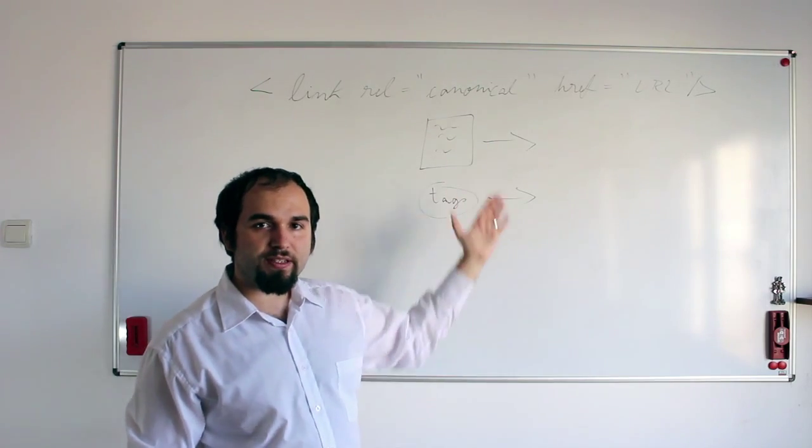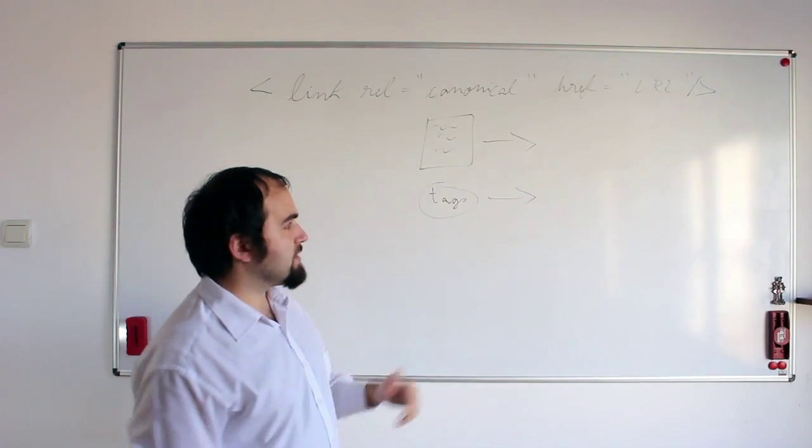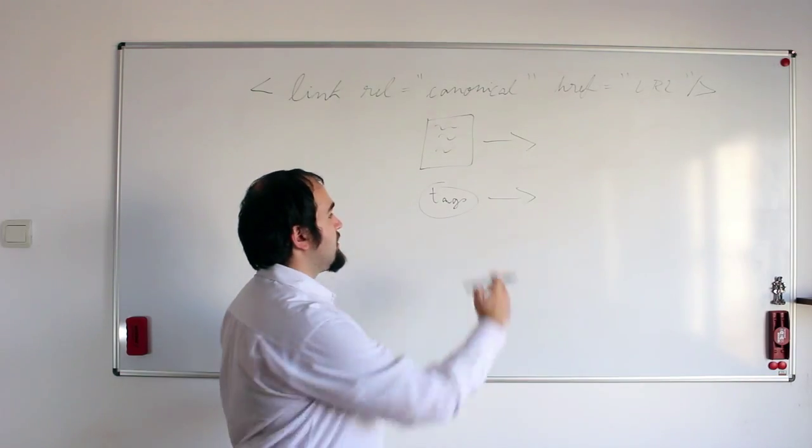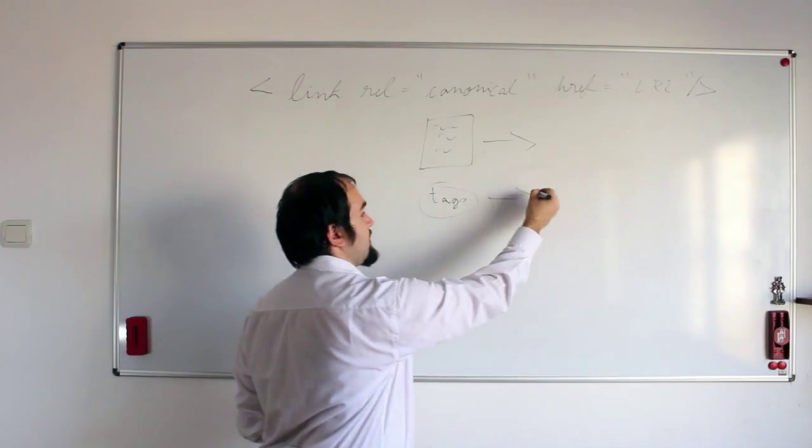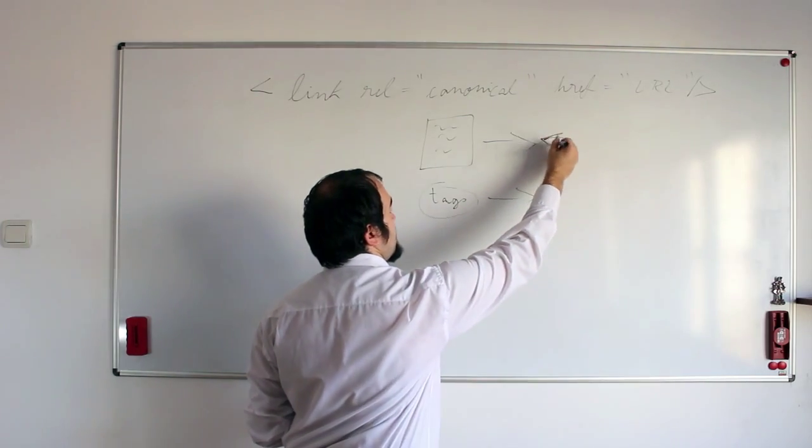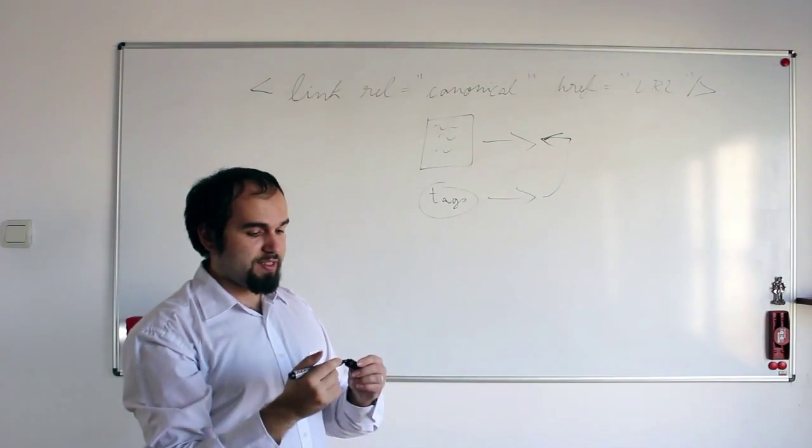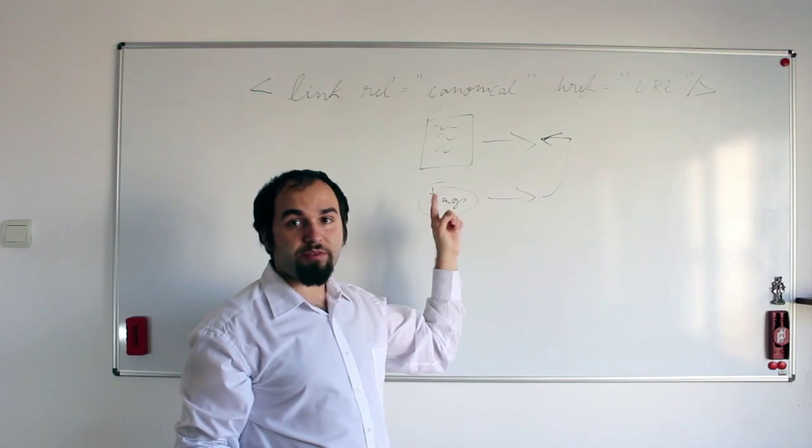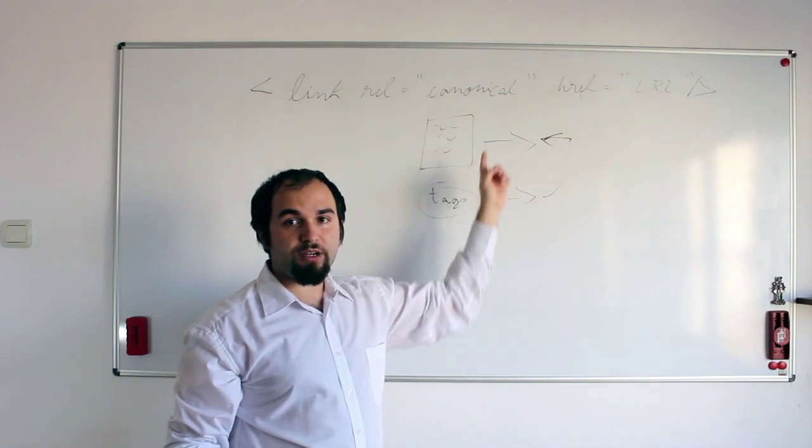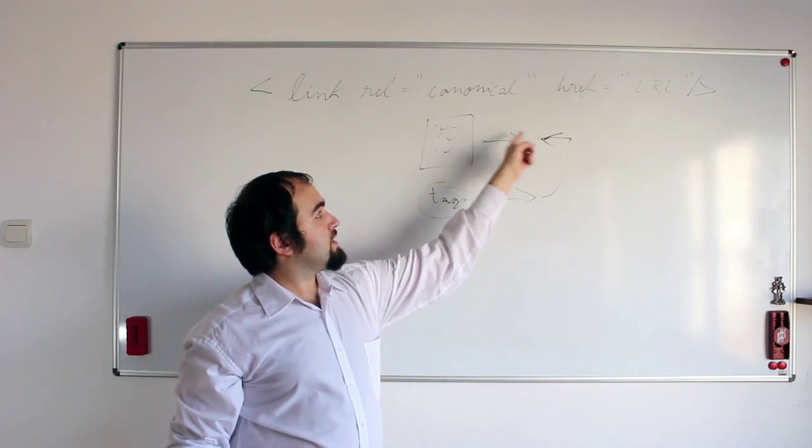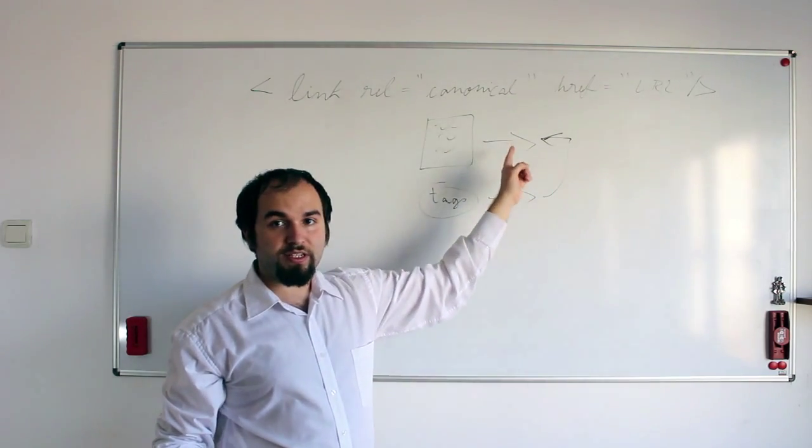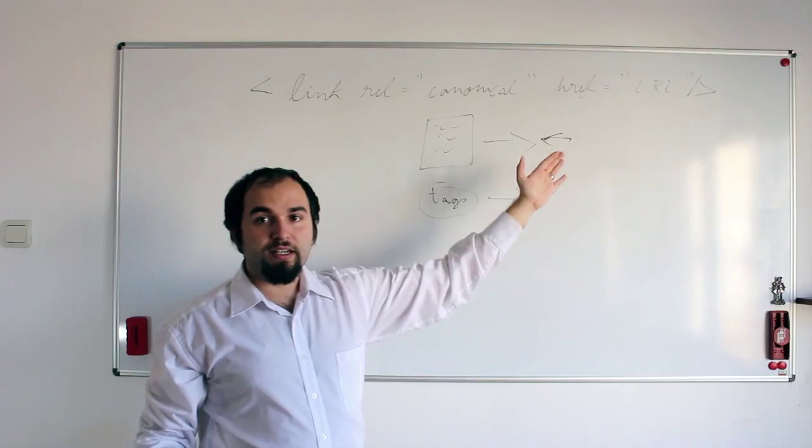So in order to remove this duplicate content that you have here, you can easily say that the content inside of the tag is actually originally from this content right here. So basically, you won't have a problem any longer with the fact that there are two links because Google will know that the content indexed here is actually originally from here and you've mentioned it due to the canonical link.